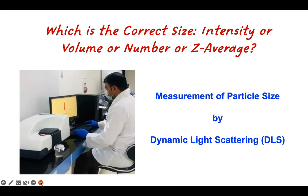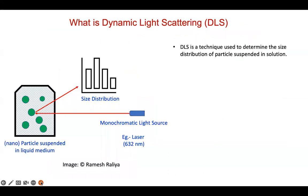Hi everyone, today we are going to discuss the question we often face while measuring or presenting data related to particle sizes — specifically when we determine or characterize nanoparticles by dynamic light scattering. The question is: which is the correct size — intensity, volume, number, or Z-average? In this talk we are going to discuss which is correct, which one to choose, and why.